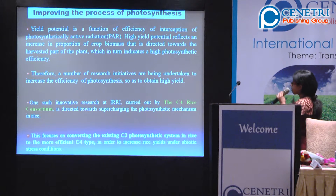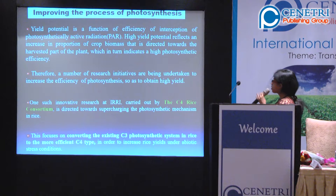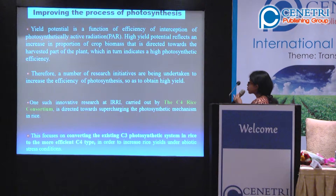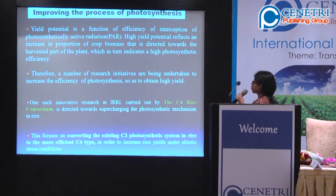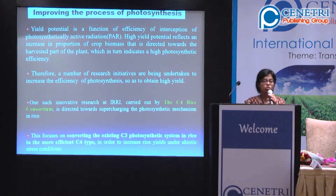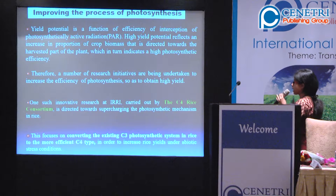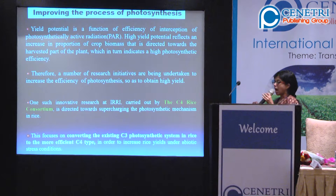To improve the process of photosynthesis, we need to target the yield potential. The yield potential is basically a combination of the amount of photosynthetically active radiation incident on the crop and what proportion of it is intercepted, so as to direct a major proportion of crop biomass towards the harvested part of the plant. We need to increase the yield potential by increasing the harvest index.